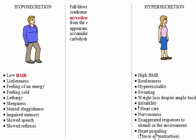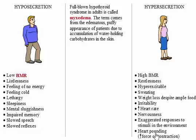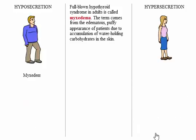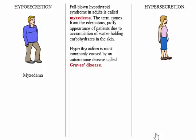Full-blown hypothyroid syndrome in adults is called myxedema. The term comes from the edematous, puffy appearance of patients due to accumulation of water-holding carbohydrates in the skin. Hyperthyroidism is most commonly caused by an autoimmune disease called Graves' disease.